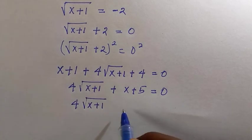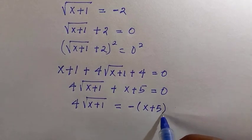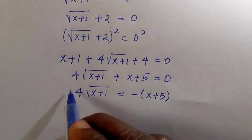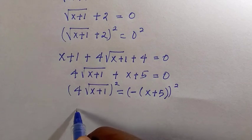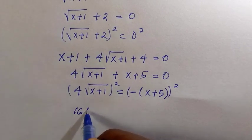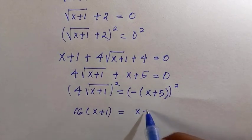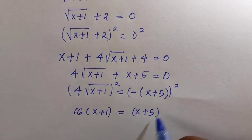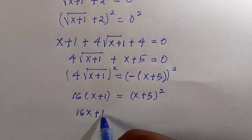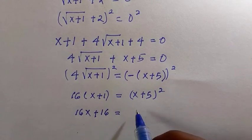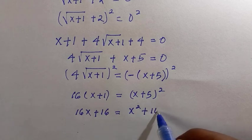So here we have 4√(x+1) equals negative (x+5). Then by taking another square again, four squared is 16, and square cancels square root, so this becomes (x+1). This negative we negate because of the square, and we have (x+5)². Multiplying this out, we have 16x + 16 equals x² + 10x + 25.